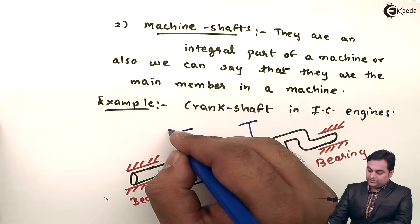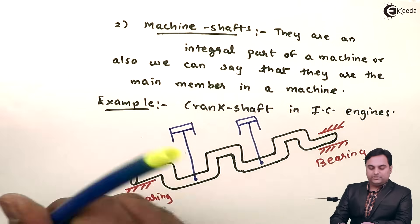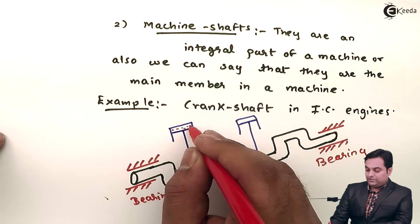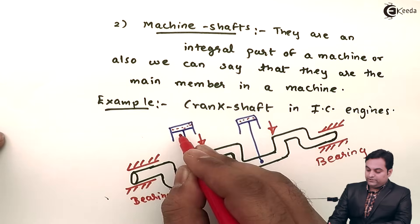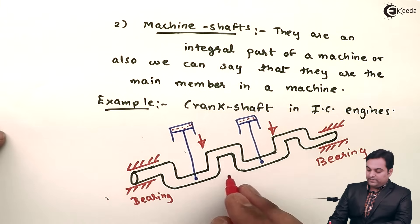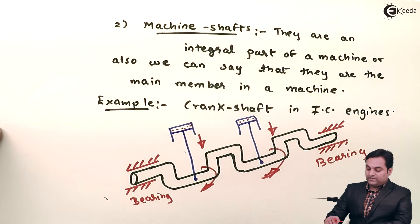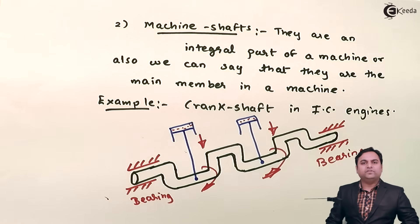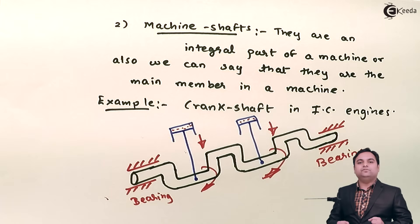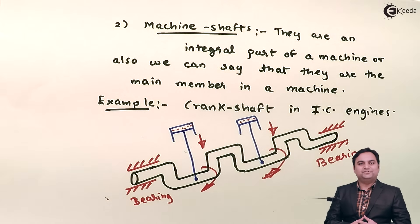Here we have two pistons inside the cylinder. When the fuel burns inside, it pushes the piston down, and the connecting rod transfers the power to the crankshaft, causing it to rotate. Once the crankshaft starts rotating, the power has been transmitted — this is an example of a machine shaft. In this video we have seen what a shaft is, the materials used, and the types of shaft in detail.